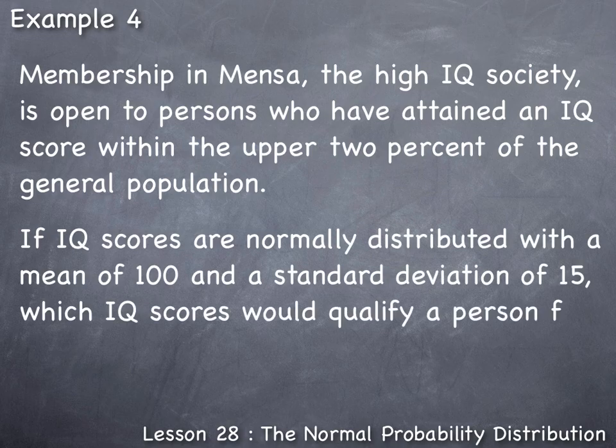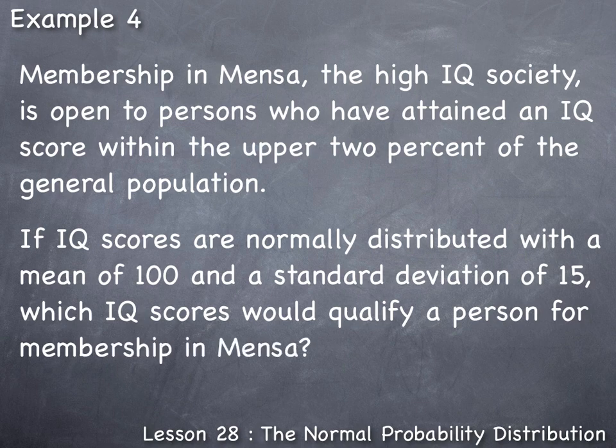We're told that IQ scores are normally distributed with a mean of 100 and a standard deviation of 15, so we can use the normal probability distribution to answer this question. To describe the normal distribution, we need to know the values of μ_x and σ_x.